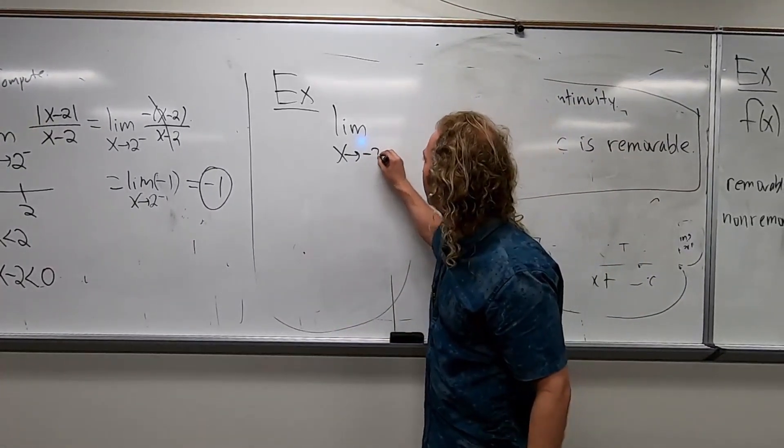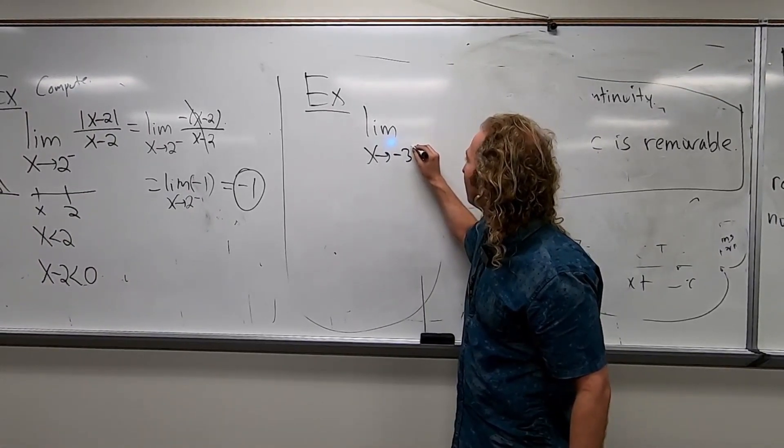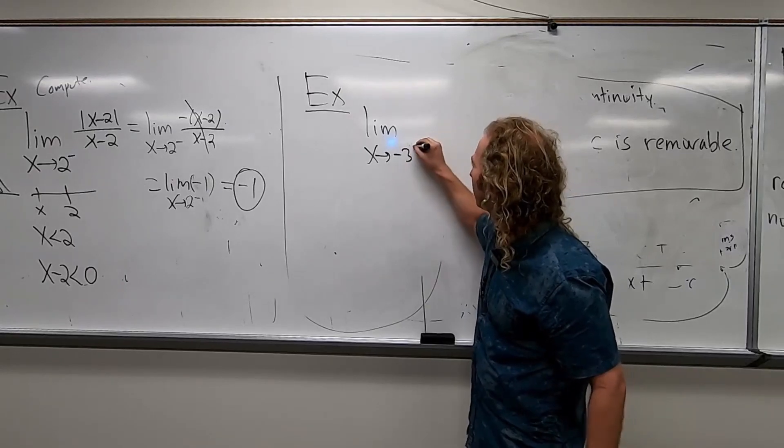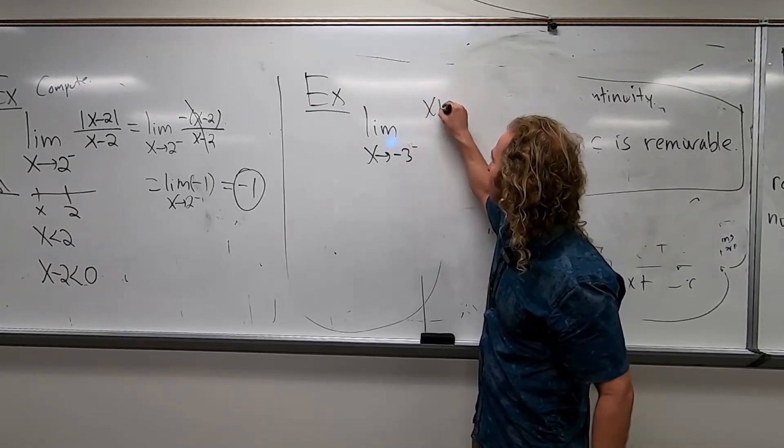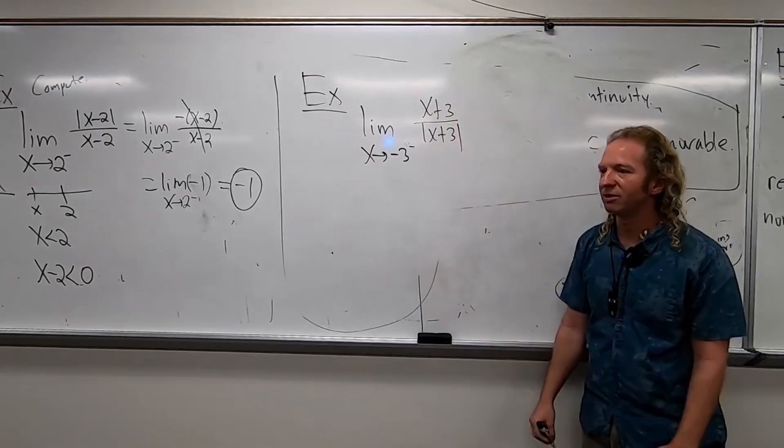Let's approach negative three from the right. No, no, no, from the left. And we have x plus three over the absolute value of x plus three. Take your time. See if you can do it.